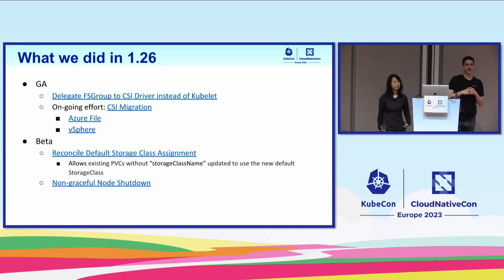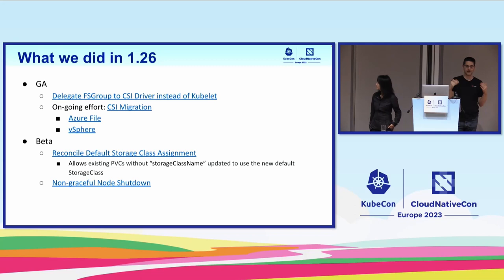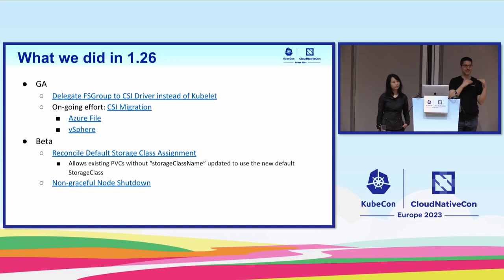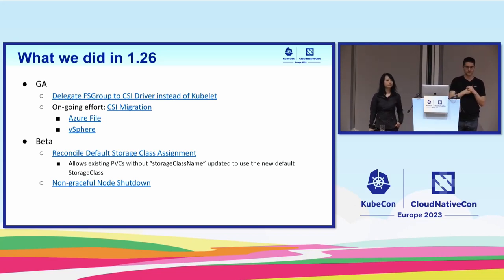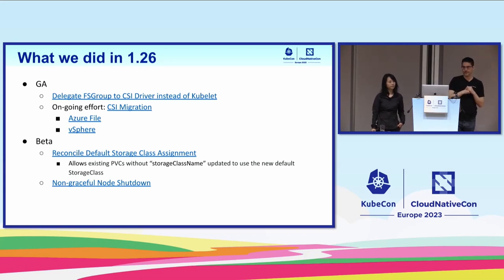As beta, we are improving how the default storage class is applied to persistent volume claims. If there is no default storage class at the point when a user creates a PVC asking for the default, the PVC will stay pending forever. We fixed that — when you create a PVC first asking for a default storage class and the default storage class is created later, we will retroactively change the PVC and it will get provisioned. Also, if you have two or more default storage classes for a short time, PVCs will still get provisioned from one of them rather than returning an error.